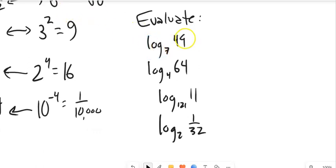So log base 7 of 49. Think about what that's asking. That's asking 7 to what power gives us 49? Well, second power. Log base 4 of 64, 4 to what power? That's supposed to be a box, like a blank, not a zero. Is 64, probably 3.